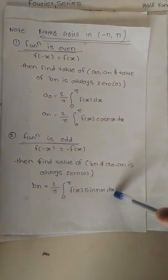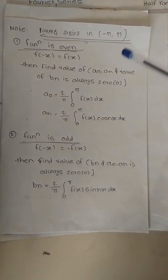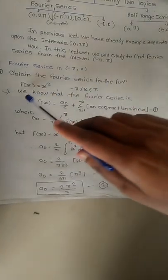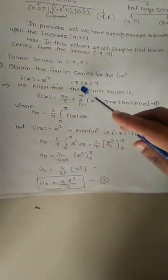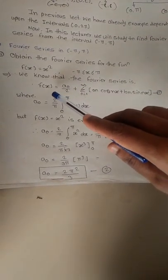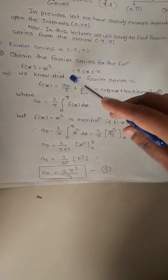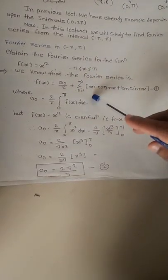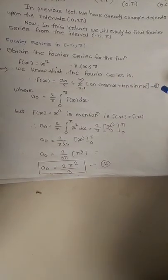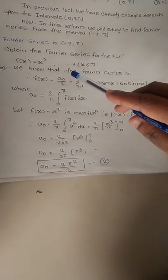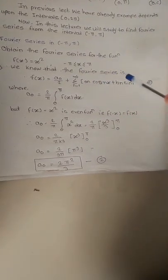We will see one example based on the Fourier series in the range from minus pi to plus pi. The question is: obtain the Fourier series of the function f(x) equal to x square in the range minus pi to pi. We already know that the Fourier series is f(x) equal to a₀ by 2 plus summation n from 1 to infinity of aₙ cos(nx) plus bₙ sin(nx). This is called equation number 1.